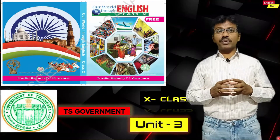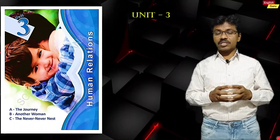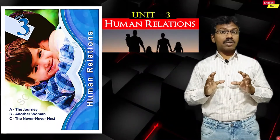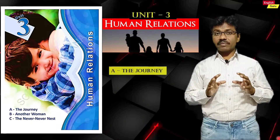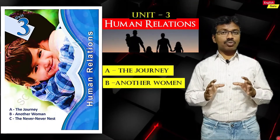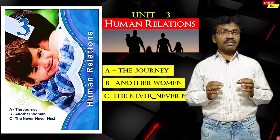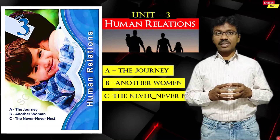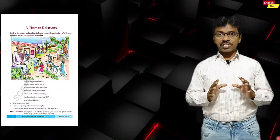In this video we are going to talk about Unit 3. The title of Unit 3 is 'Human Relations,' which is the theme of the unit. It includes three chapters: Reading A — Chapter 1, 'The Journey'; Reading B — Chapter 2, 'Another Woman'; and Reading C — Chapter 3, 'The Never Never Nest.' In this video we are going to talk about the phase sheet.